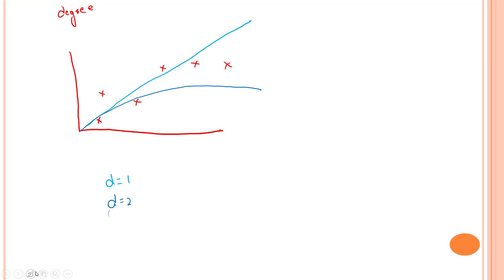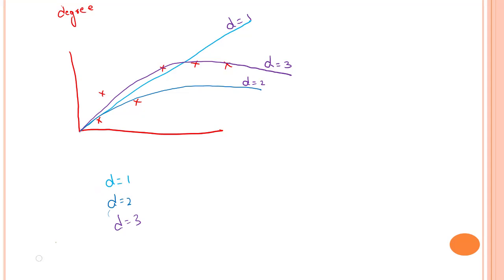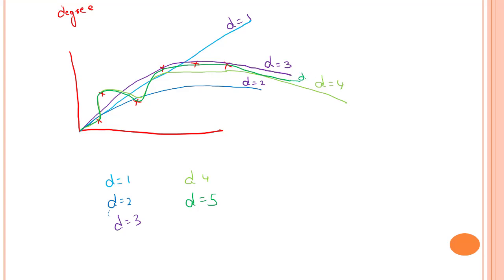For d equals to three, we get quite a good fitting line. The dark blue is for d equals to two and the straight line is for d equals to one. For d equals to four, we get a more complex curve — the green line. For d equals to five, we get an even more complex model that passes through all the data points.